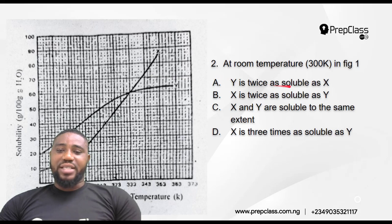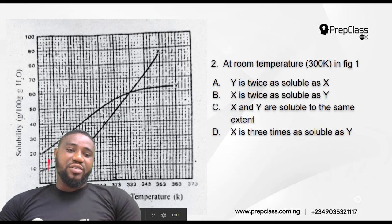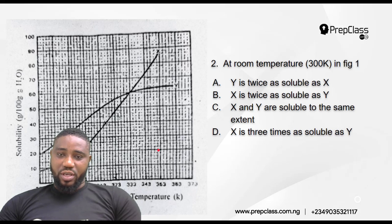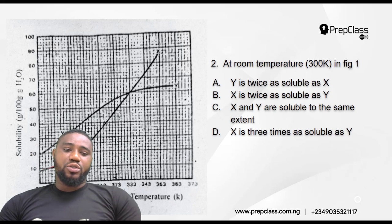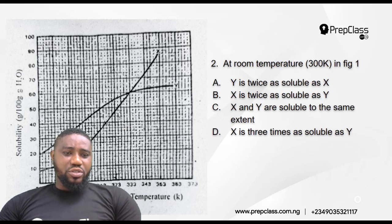Question two: at room temperature, 300 Kelvin, referring to the graph (Figure 1) — is Y twice as soluble as X, is X twice as soluble as Y, are X and Y soluble to the same extent, or is X three times as soluble as Y? Looking at this graph, solubility is plotted against temperature. As temperature increases, solubility increases. The curve for X is increasing steadily with temperature.